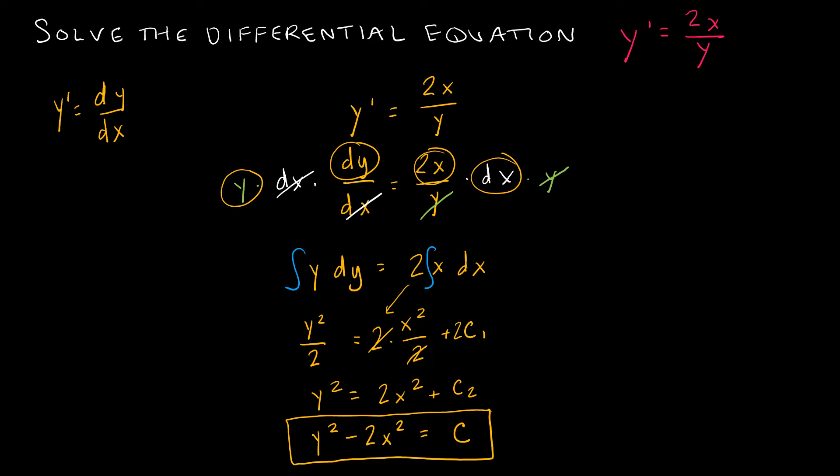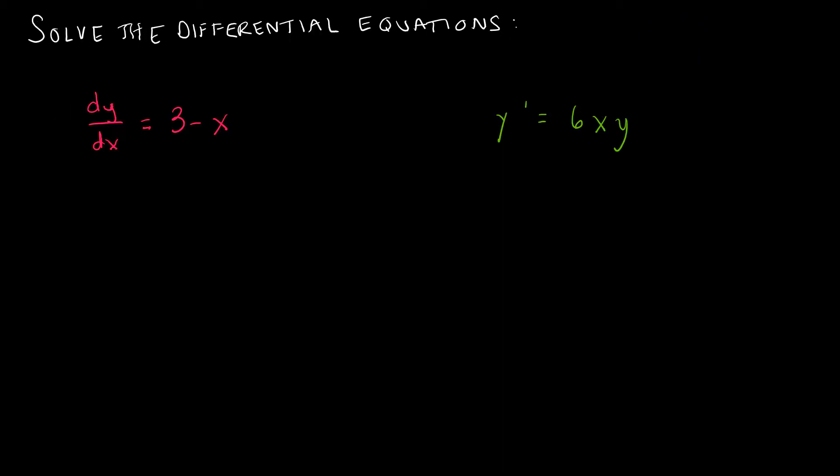That's all we had to do — pretty straightforward. We just get x's to one side, y's to the other, and then integrate with respect to those variables. Here are two more for you to try. Press pause if you'd like to attempt them before we go through them together. The first one is straightforward; the second may require you to reach back into calculus 1.